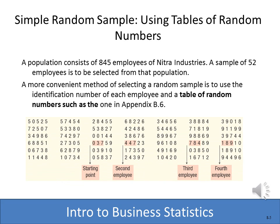One simple method for simple random sampling is to use a table of random numbers, which you'll find in your textbook — you can also generate one with Excel. For example, let's assume the population consists of 845 employees and we want to take a sample of 152.